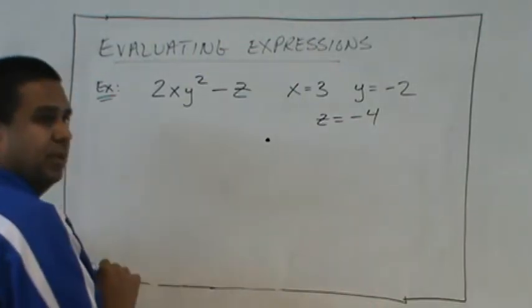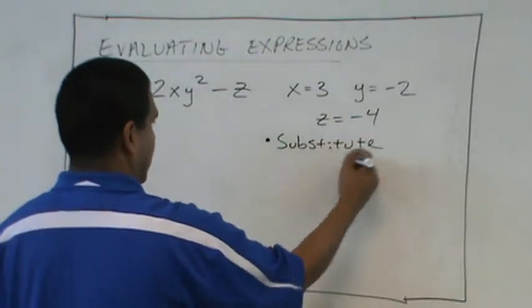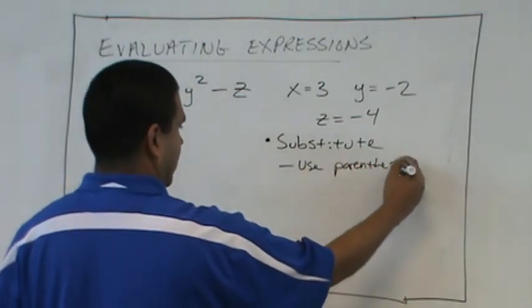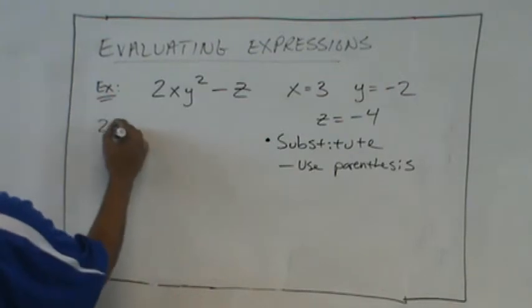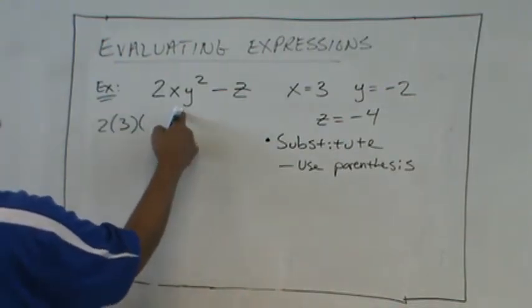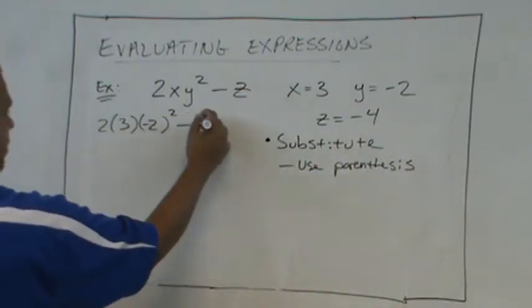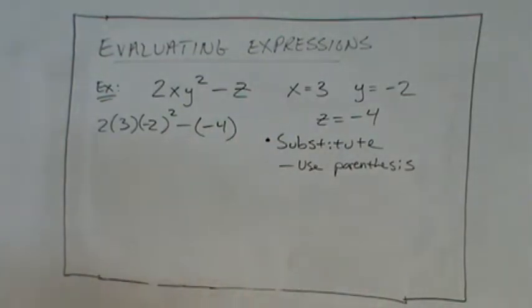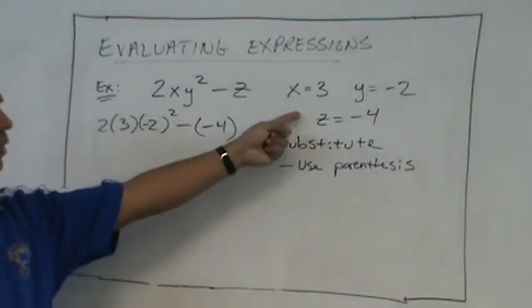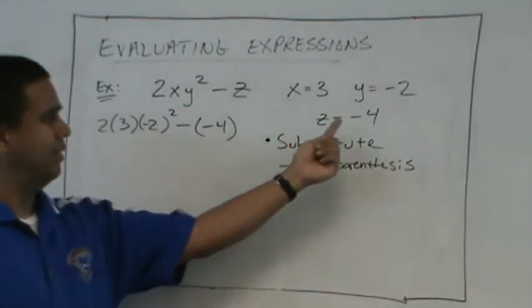What is the first thing we're going to do? Substitute. Substitute. So we're going to substitute. And we make sure we use parentheses. So we have our 2 parentheses because we're going to substitute x. x is 3. And we have parentheses. We're going to substitute y. y is negative 2. And then we subtract our z with negative 4. Notice I used parentheses for every single variable when I made the substitution. It's very important you do that so that we don't lose these negatives on our values.